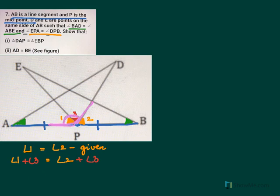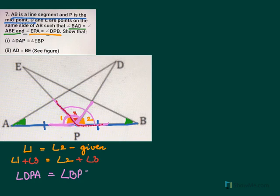Now, 1 plus 3 is this entire angle, which is angle DPA. And 2 plus 3 is this angle here, which is angle DPE. So angle DPA equals angle DPE, meaning 1 plus 3 equals 2 plus 3.